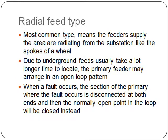For underground residential distribution, it is mostly using the radial feed type. This means the feeders supply the area radiating from the substation like the spokes of a wheel. Due to underground faults usually taking a lot longer time to locate, the primary feeder may also be arranged in an open loop pattern. When a fault occurs, the section of the primary where the fault occurs is disconnected at both ends and the normally open point of that open loop will be closed instead, so that services can be continually fed while isolating the fault that needs to be investigated.